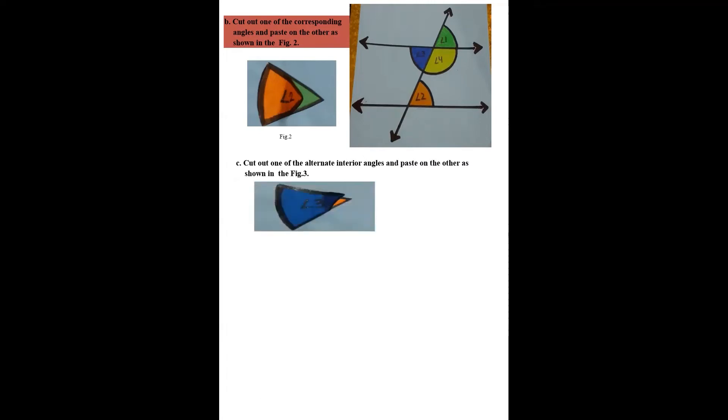Now, if you just observe this figure three, angle 2 and angle 3, we are just checking are they coming overlapping each other or not? If you observe now, they will overlap each other and that means they are equal and they are known as alternate interior angles.